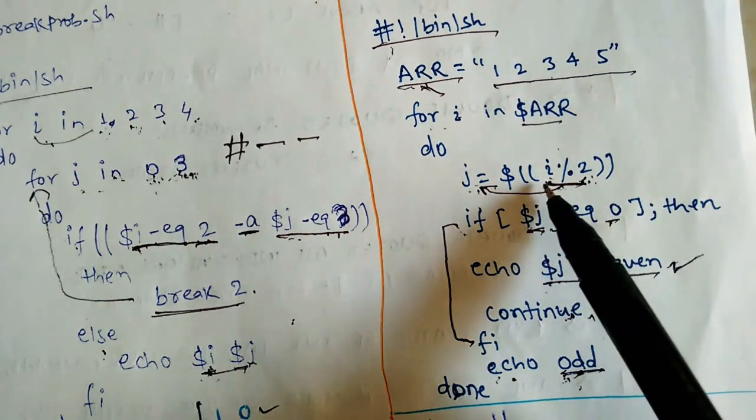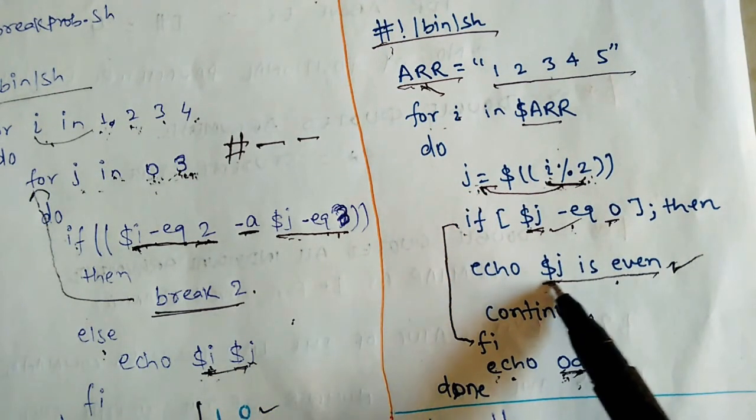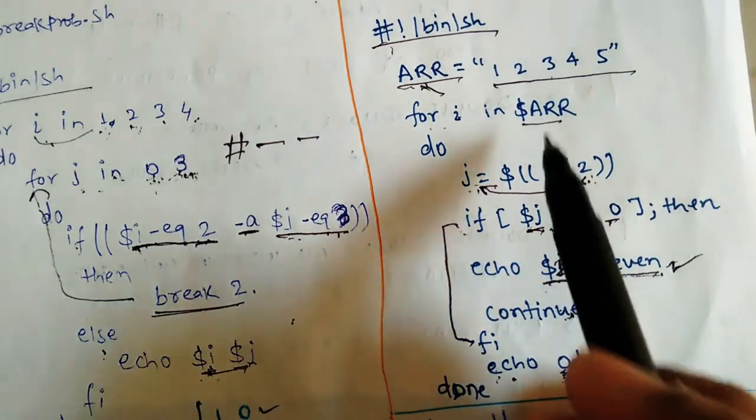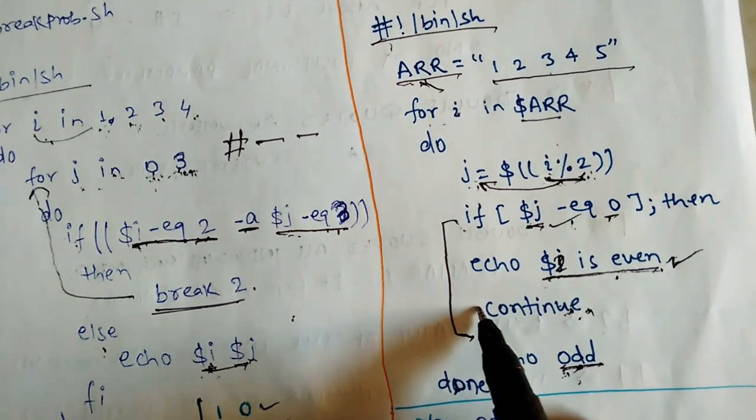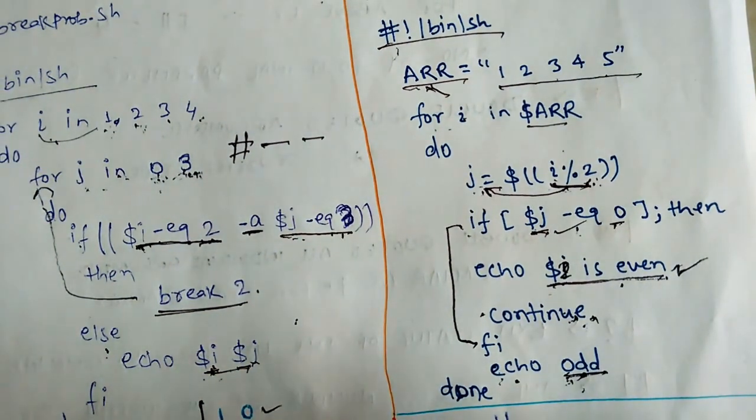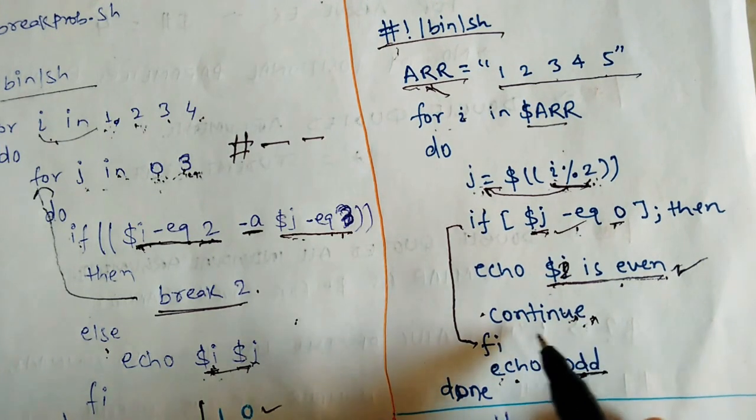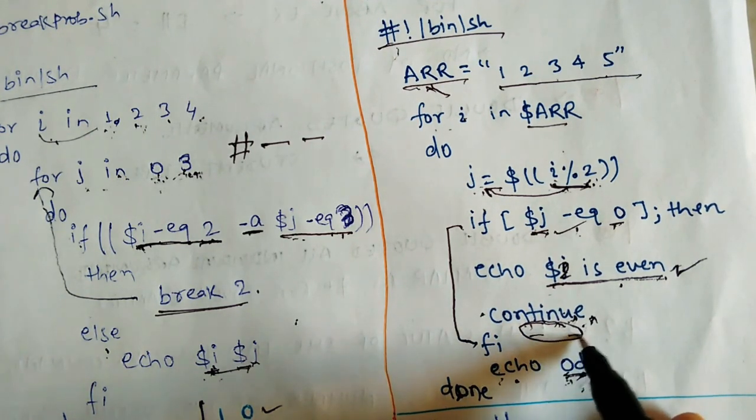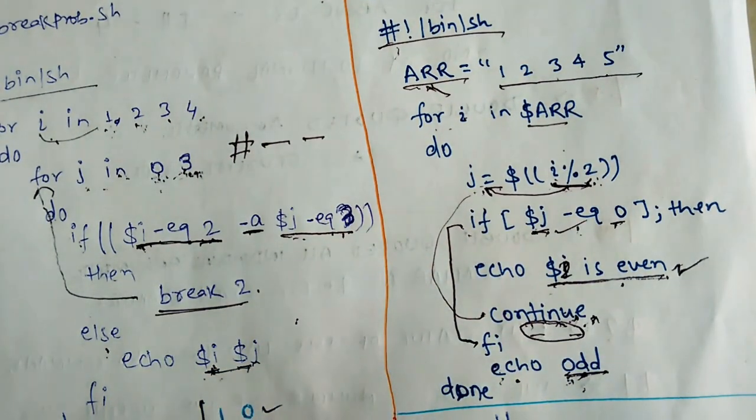Then next value 4, j stores nothing but 0, then if condition true, dollar j is even. Instead of dollar j we must write here dollar i so that i will print 2, 4. Now continue will not execute this statement. Continue use means this statement will not execute, once again loop or iteration will execute. So this is the simple concept of break and continue statement. Thank you so much.